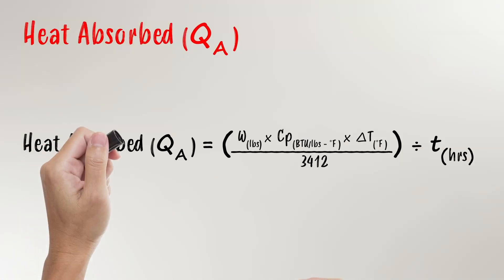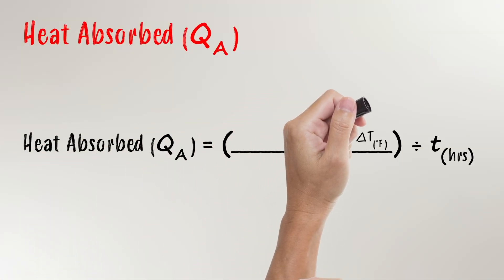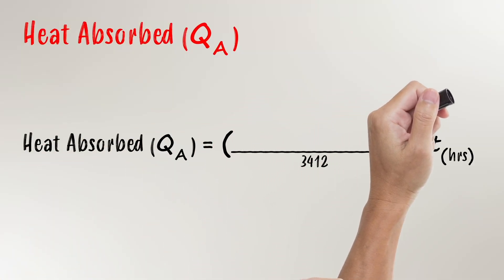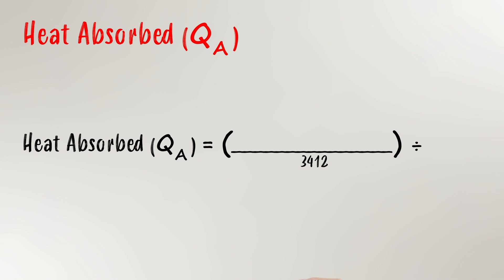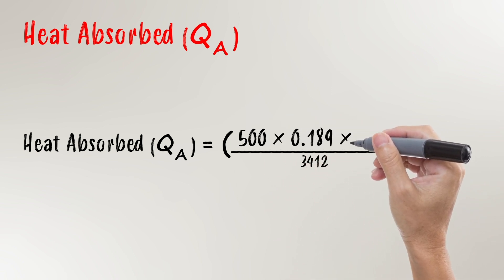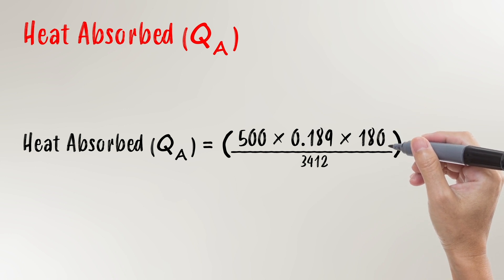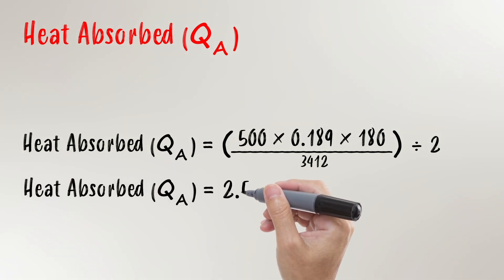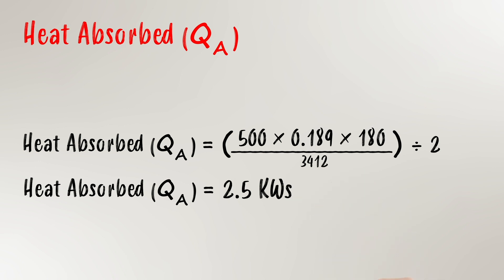Step three: solving the equation. If the first two steps are done correctly and the values are in the correct units, this step is a breeze. All you've got to do is plug in the values — the mass, the Cp, the delta T, and the time required — do some simple math, and now you know the kilowatts absorbed per hour for your heating application. In this scenario, we end up with a total energy required of 2.5 kilowatts.